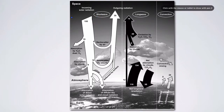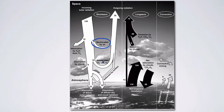On the left we have shortwave radiation, and the amount of incoming solar radiation is 100 relative units. Coming down, a number of different things happen to shortwave radiation: some is reflected by backscatter — that's 6 units — and there's also reflection by clouds, which is 16 units. So already almost a fourth of the energy has been reflected back upwards into space.